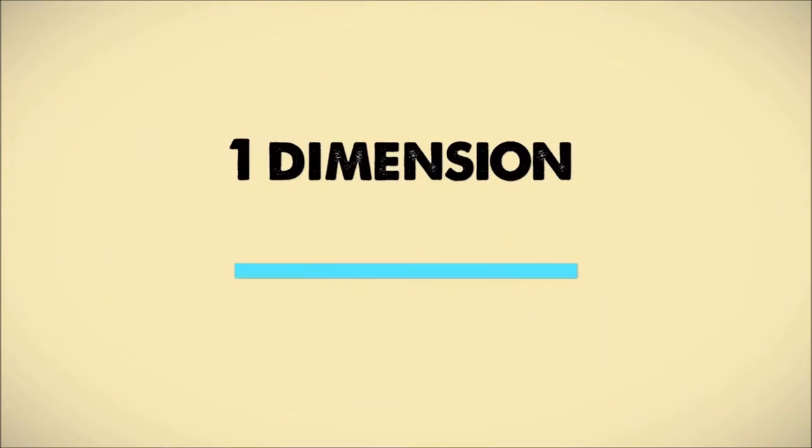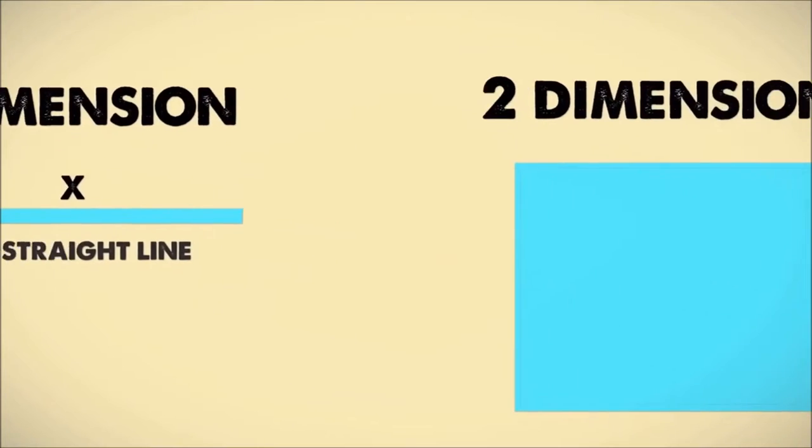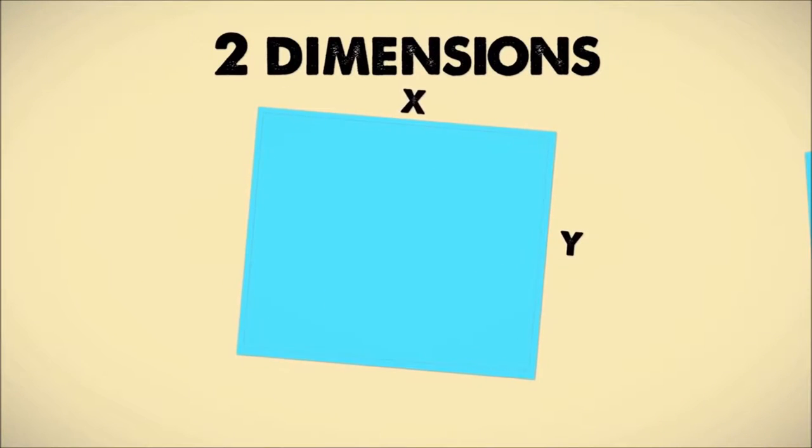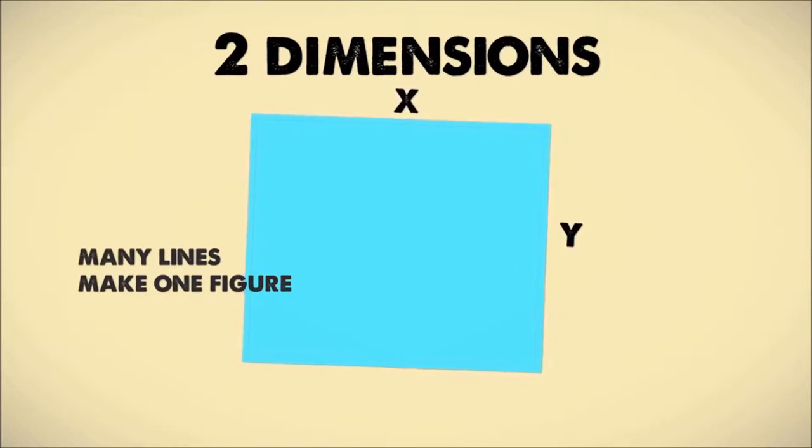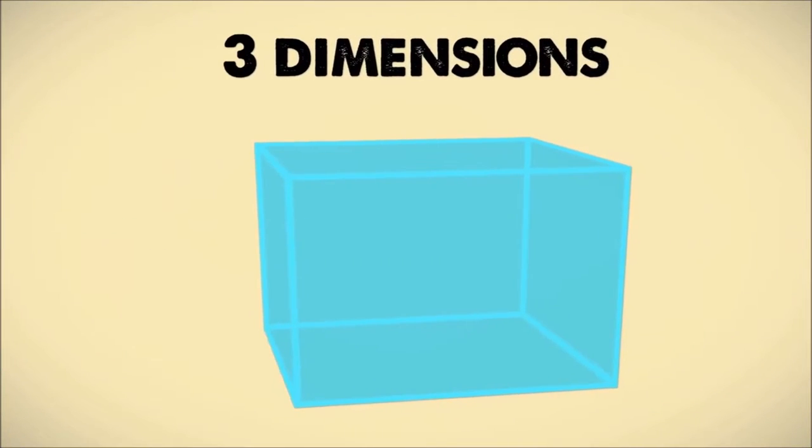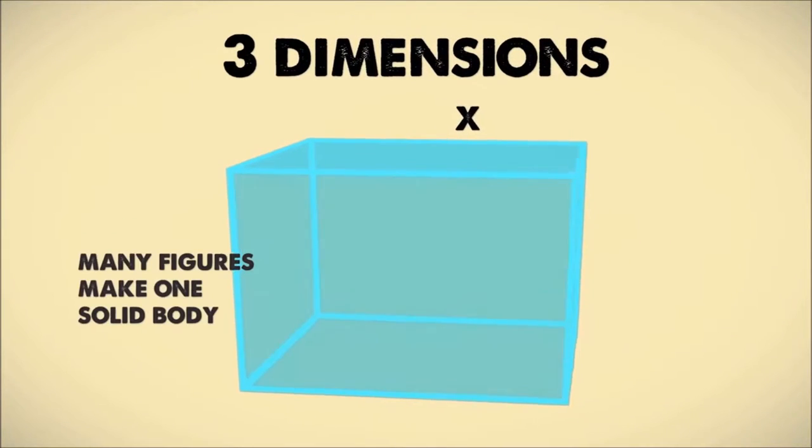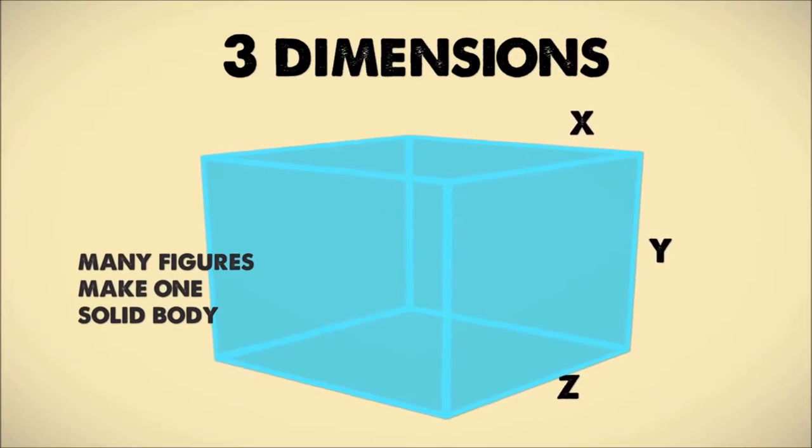He is making the point that a world of one dimension would be a straight line. In a two-dimensional world, you still get straight lines, but many lines make one figure. And in a three-dimensional world, you still get figures, but many figures make one solid body.